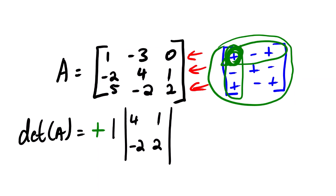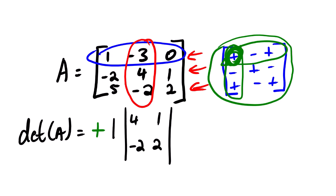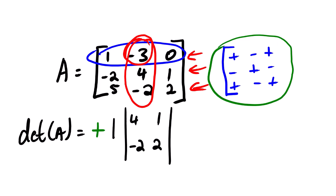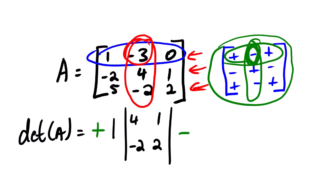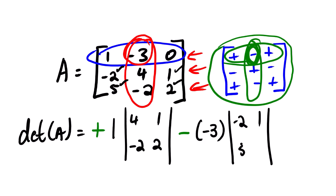We move on to the second element. Remember, we are still focusing on the first row. The second element on the first row also influences the second column — the number is negative three. Going to our sign table, we are still focusing on row number one, column number two. We can see that the sign should be negative, and the number is negative three. We put our mini matrix, which has negative two, one, five, and two.